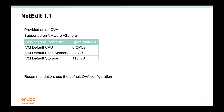The OVA comes pre-configured with the following specs: 6 CPUs, 32 GB of RAM, and 115 GB of storage. With these basic parameters, the NetEdit server will give you perfect performance and will cover the needs of your current deployment.